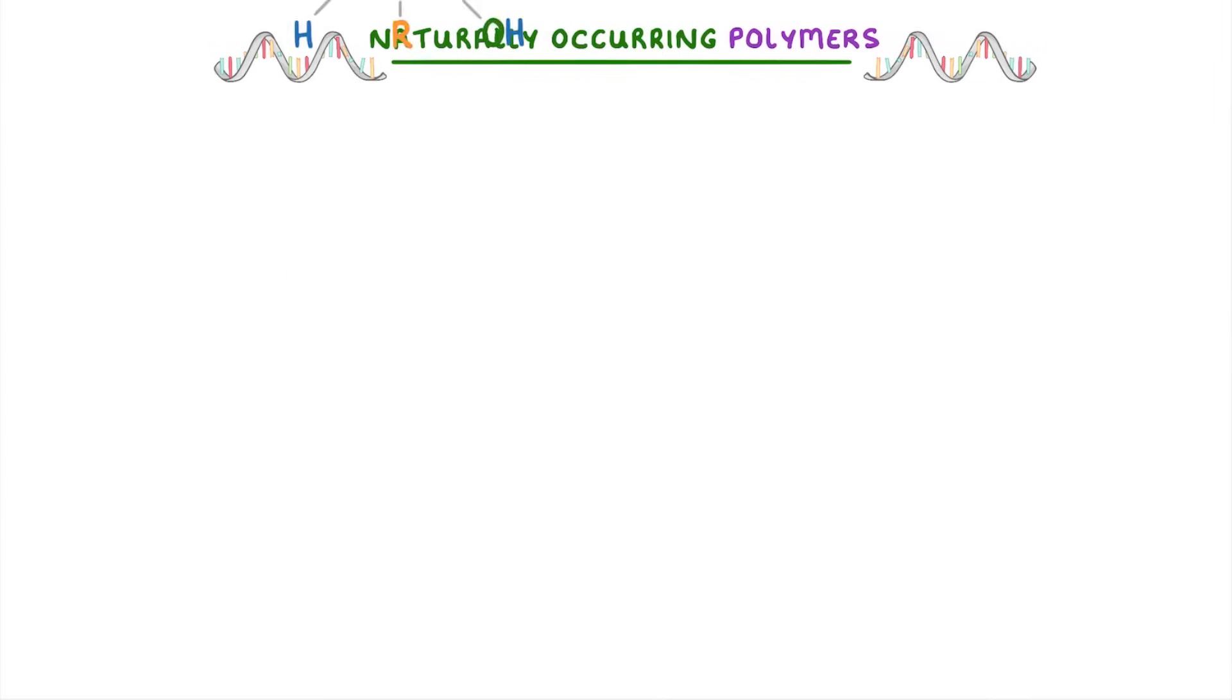For example, if we look at an amino acid, the most important parts are these two functional groups.